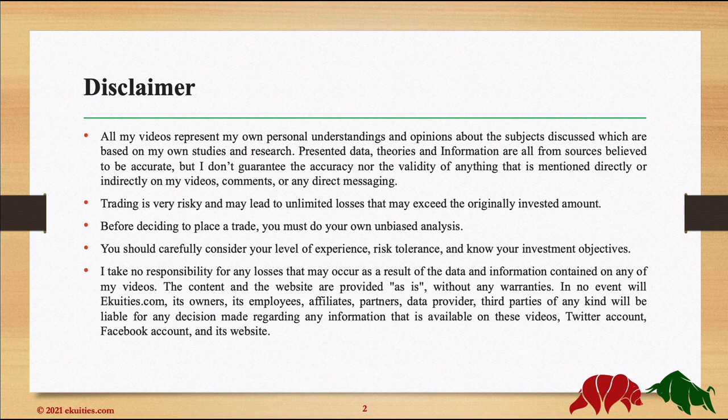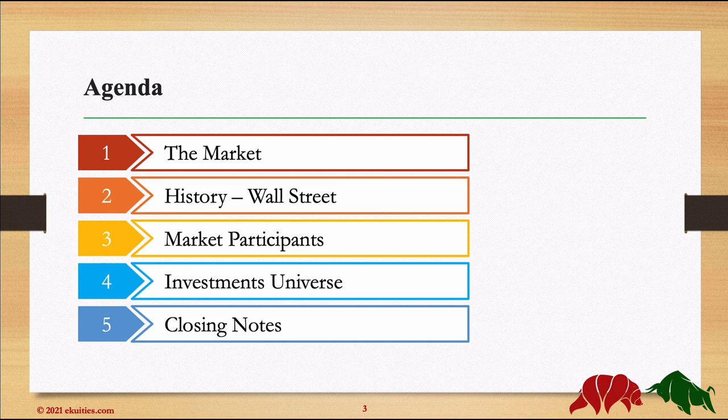Okay, so with this out of the way, let's get started. So what do we have on the menu today? The plan is to define what we mean by the market, a quick history about Wall Street, market participants — these are your competitors by the way — what are the investment options, the investment universe, and finally closing notes.